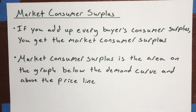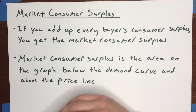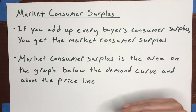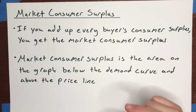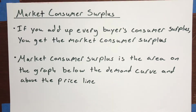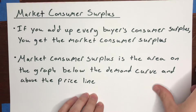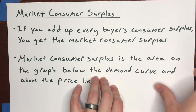The way that you do that is take the demand curve and look at the area on the demand curve that is above the price line and below the demand curve. That's going to give you a triangle, and the area of that triangle is going to be equal to the consumer surplus in the market. Let's go through a simple example of that.